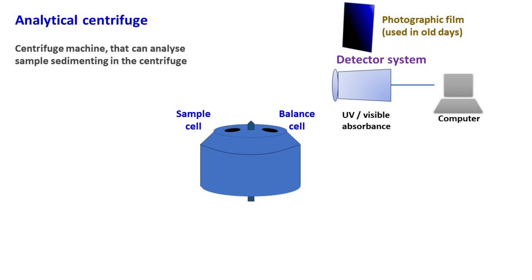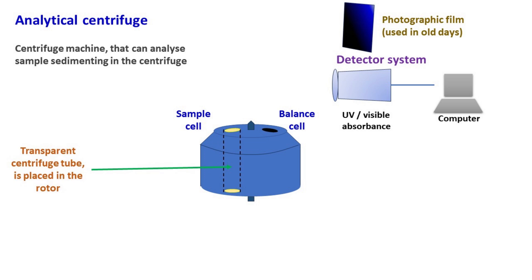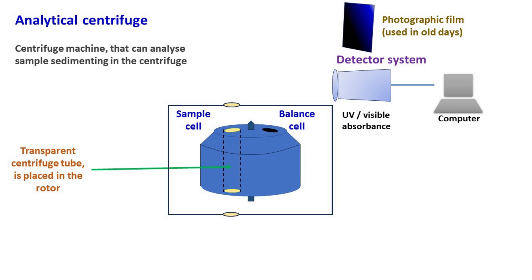The top and bottom part of the sample cell is transparent. The bottom part of the centrifuge chamber is attached with a light source, which can be UV or visible light. The light is allowed to pass through the rotor and the transparent centrifuge tube placed in the rotor.